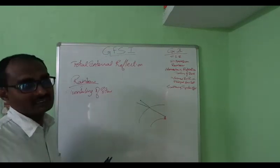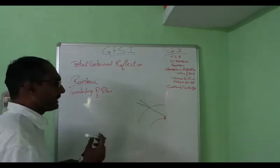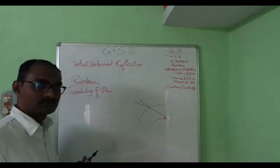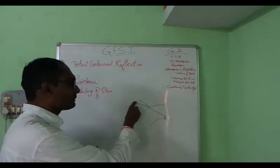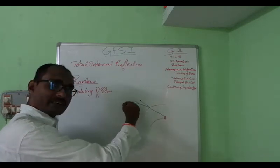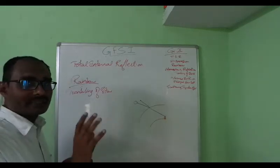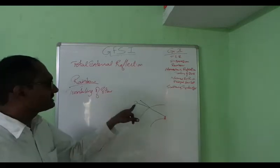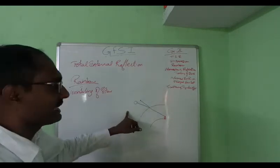Why does twinkling not happen with planets? Planets are closer to us, so we cannot show them as a point source — they appear as a larger source. If the light ray from one part of the planet is not reaching us, the light coming from another part of the planet will still reach our eye, and thereby we can see the planet clearly. So the twinkling effect is not noticed. This is the reason why twinkling of stars is noticed, and this is a very important question for your examination as well.